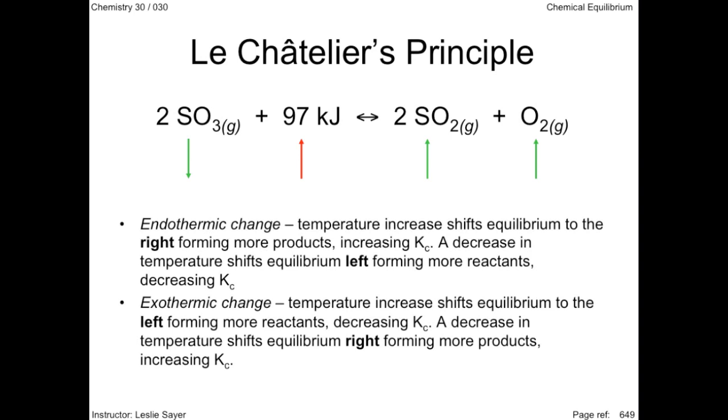The effects of temperature on the equilibrium position is summarized here. Notice that a change in temperature is the only change that causes a change in the equilibrium constant. In an endothermic change, the temperature increase shifts equilibrium to the right, forming more products, and this increases the equilibrium constant. A decrease in temperature shifts equilibrium left, forming more reactants, thus decreasing the equilibrium constant. In an exothermic change, the temperature increase shifts equilibrium to the left, forming more reactants, decreasing the equilibrium constant.